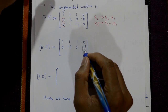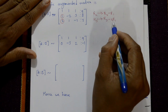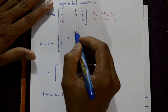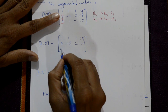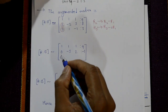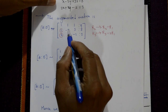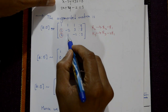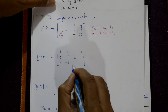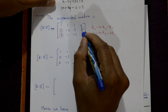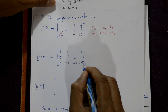Now for the third row, R3 = R3 minus 2R1, multiplying R1 by minus 2. The first element becomes 0, then minus 2, then 1 minus 2 is minus 1, and 3 minus 2 times 9: minus 18 plus 3 is minus 15.